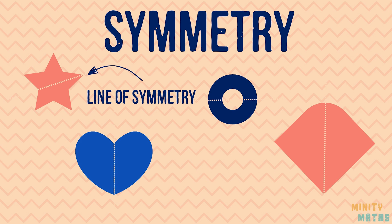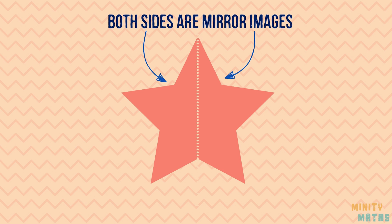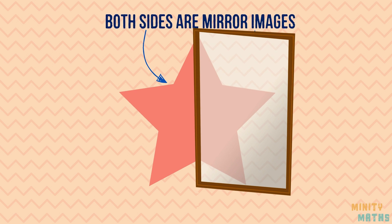A line of symmetry may also be called the mirror line or axis of symmetry. So if you were to fold the shape along the line, both halves would match equally. The same would apply if you were to place a mirror along the line — the reflection should show the whole shape unchanged.